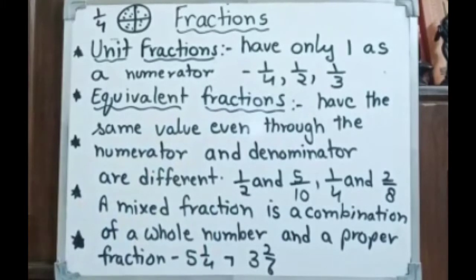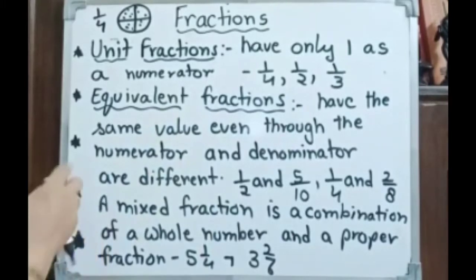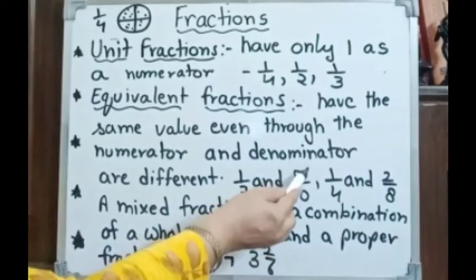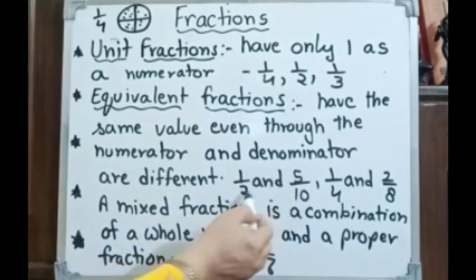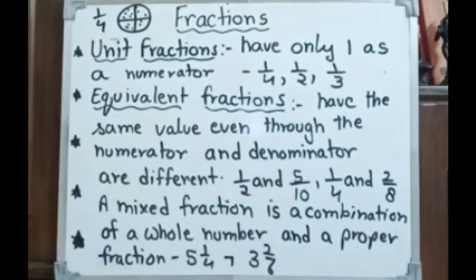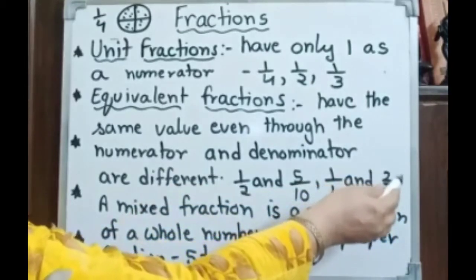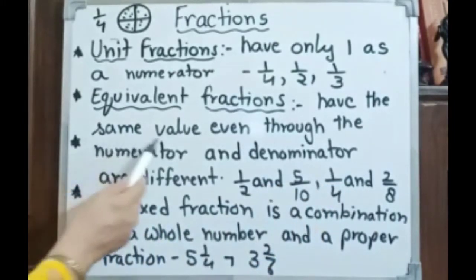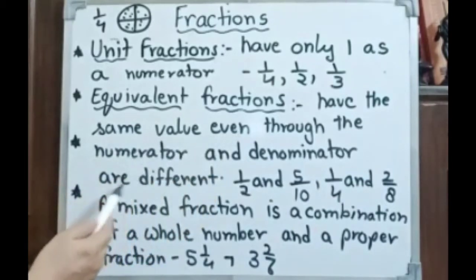Equivalent fractions have the same value even though the numerator and denominator are different. For example, 1 by 2 and 5 by 10 — if we multiply: 1 times 5 is 5, 2 times 5 is 10, giving 5 by 10. If we reduce this fraction, it becomes 1 by 2. Similarly, 1 by 4 and 2 by 8 — when we reduce 2 by 8, its value is 1 by 4. Equivalent fractions have the same value.